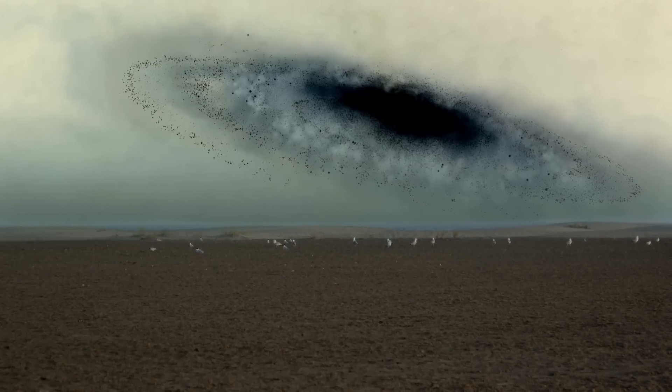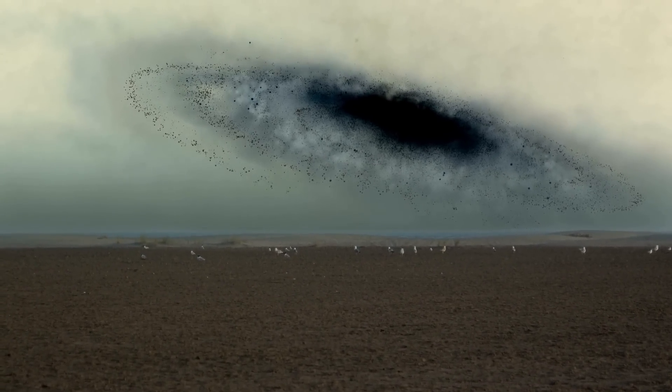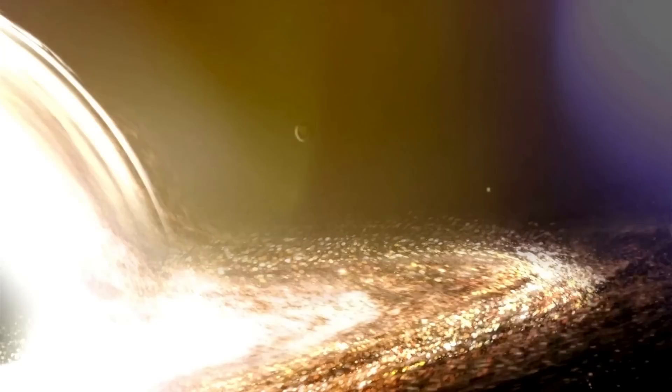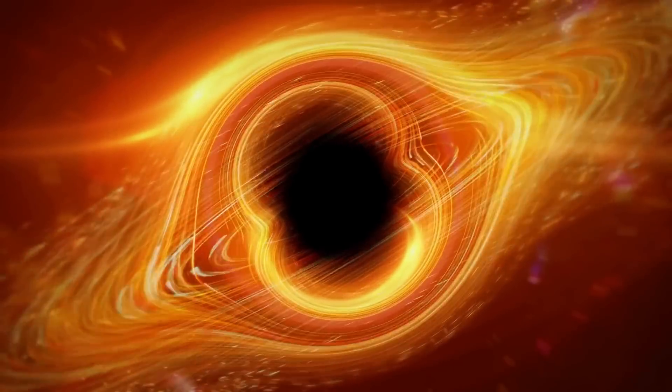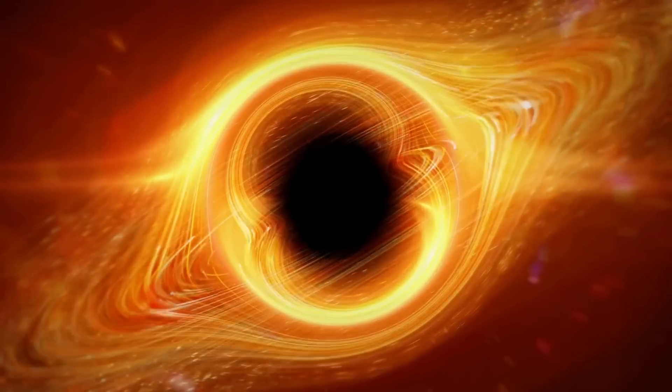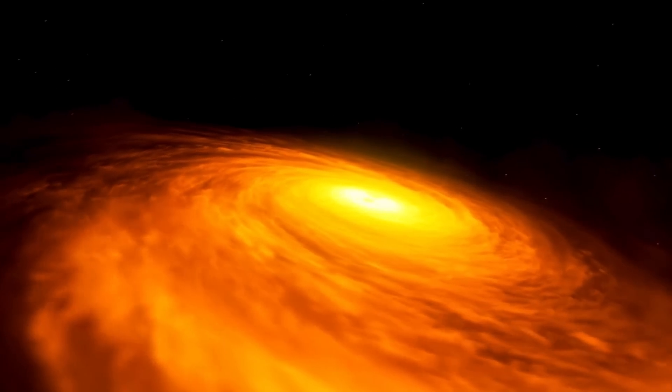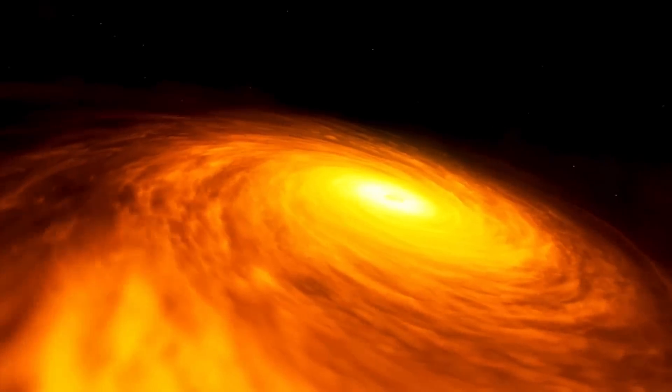This cataclysmic process, known as spaghettification, represents the ultimate manifestation of a black hole's gravitational dominance. As an object approaches the event horizon, the gravitational gradient across its length becomes so extreme that it is stretched and distorted into a filamentary structure resembling strands of spaghetti. The forces exerted by the black hole overwhelm the internal bonds holding the object together, resulting in its disintegration into a stream of matter destined to merge with the singularity.